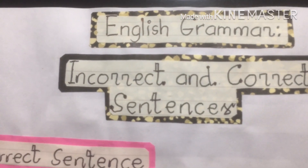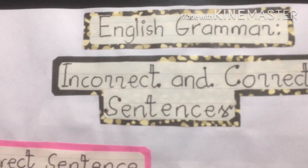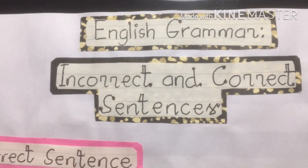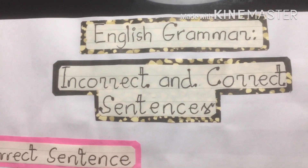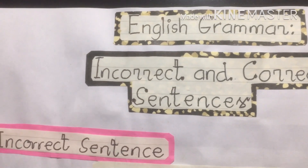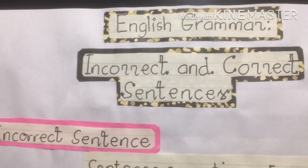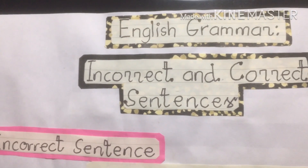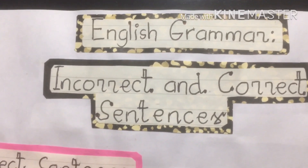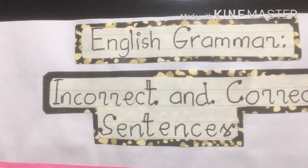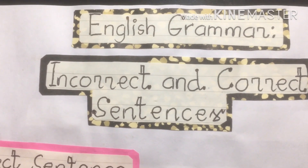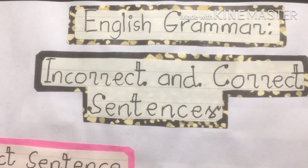So today, we are going to discuss about English grammar and correct and incorrect sentences. What makes a sentence grammatically incorrect? Remember, there are four main problems that prevent people from writing complete, grammatically correct sentences. These problems include the sentence fragment, the run-on sentence, lack of subject-verb and pronoun reference agreement, and lack of parallel structure.